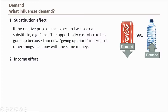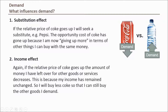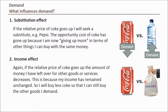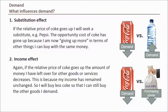The income effect relates to a price change relative to income, not relative to other goods' prices. When the price of a good increases relative to income, the buyer has less money left to purchase other goods or services. This decrease in purchasing power is seen as a fall in real income, leading to a lower quantity demanded for the more expensive good — in our case, cola — so that the consumer can still buy the same amount of other goods as before.